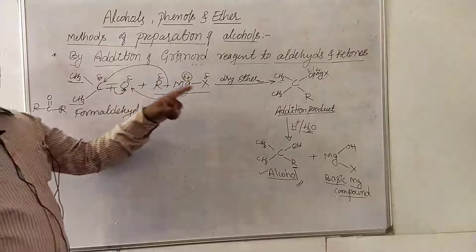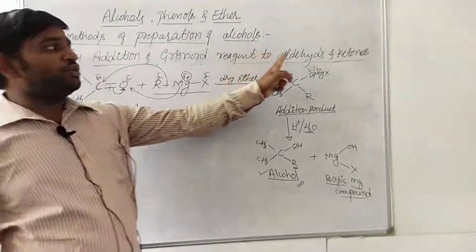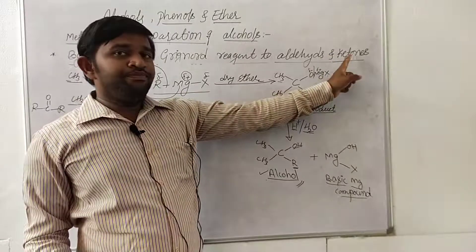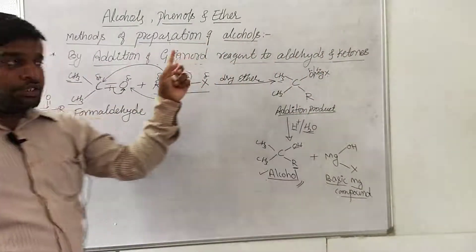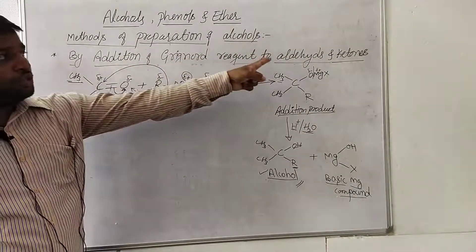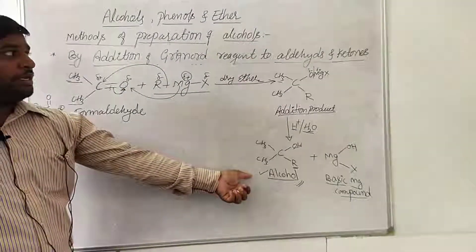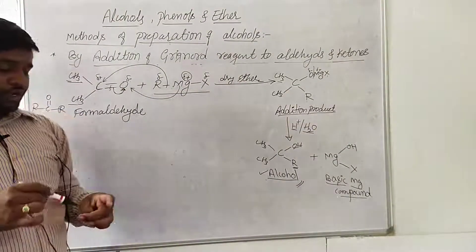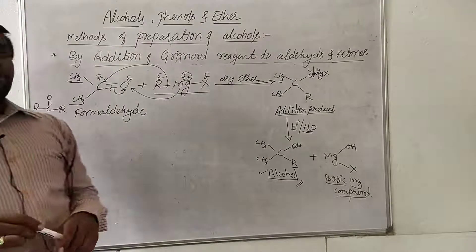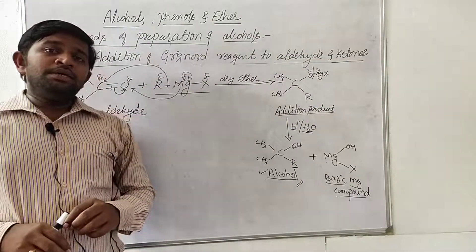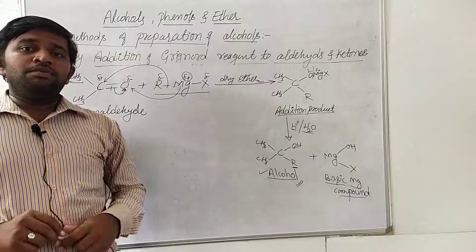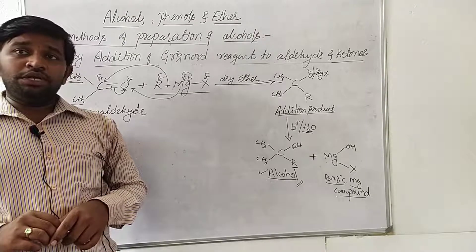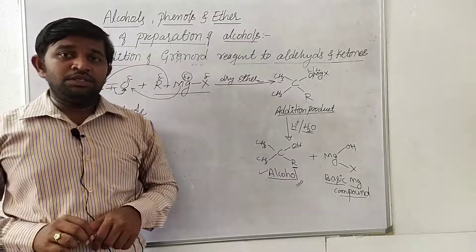We can prepare alcohols by addition of Grignard reagent to aldehydes and also to ketones. By adding this Grignard reagent to both aldehydes and ketones, we can obtain such kinds of alcohols. This completes the preparations of alcohols. The next class is going to discuss the preparations of phenols, which is very important for examination purposes. Thank you.